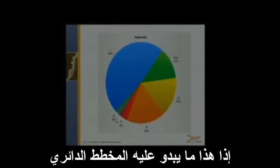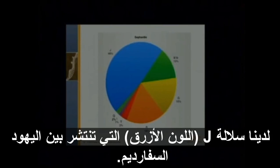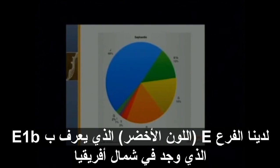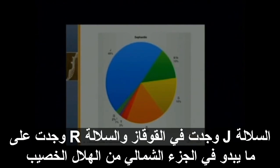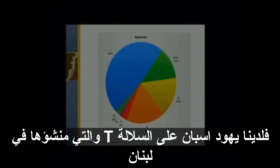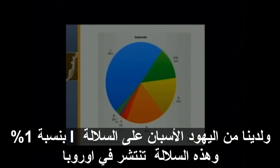Here's what a pie chart looks like. We have that quintessential J group — among the Sephardic Jews, 48 percent, or half, are from a branch of the tree found in the Fertile Crescent. We have the E branch, known as E1B, found in North Africa. The G group is found in the Caucasus. The R group is found in what I would refer to as the northern part of the Fertile Crescent. And then we have a few bit players — the T group found in Lebanon, and the I group at 1 percent, which is actually much more common in Europe.